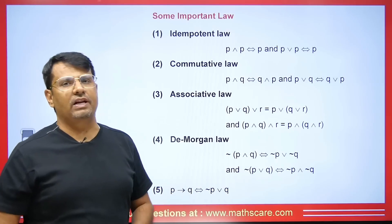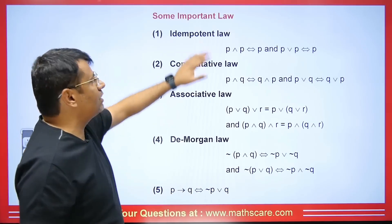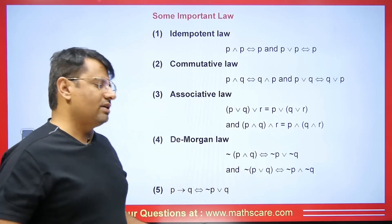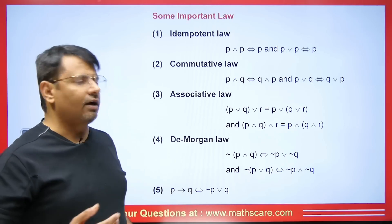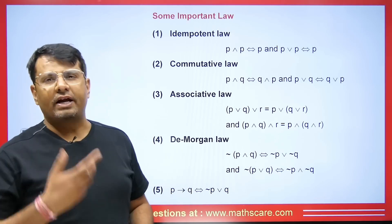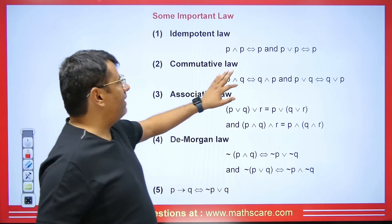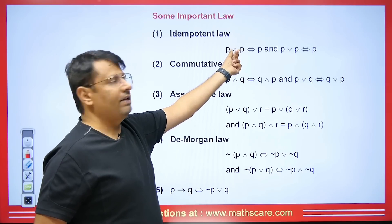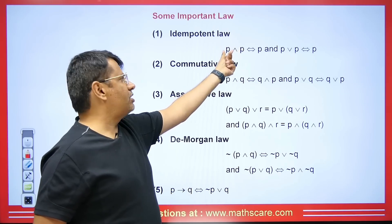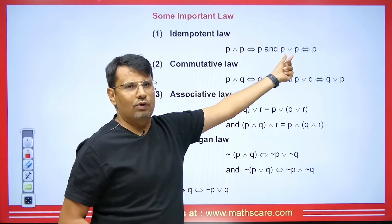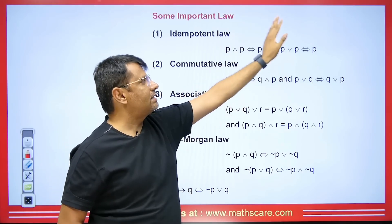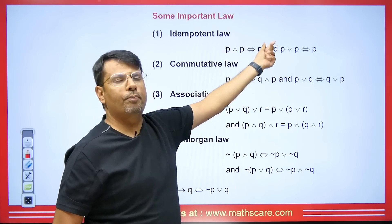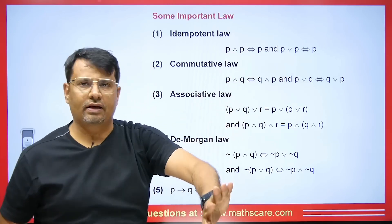Before studying normal forms, we need to learn some laws. The first one is the idempotent law — similar to idempotent matrices or idempotent elements in group theory. Here, if we have two statements p, whether 'and' or 'or' is between them with the same p, the value will always be equal. If it is p AND p, then p will come. If it is p OR p, then also p will come.